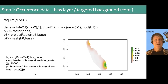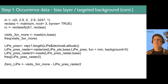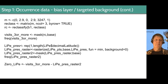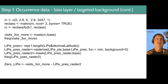So if sampling bias is a big issue in your data, I'd highly recommend thinking about thinning your occurrence data, using a bias layer, or using targeted background points. Targeted background points are a similar kind of process. Remember that B1 raster layer we created, where each value related to the survey effort in that grid cell?